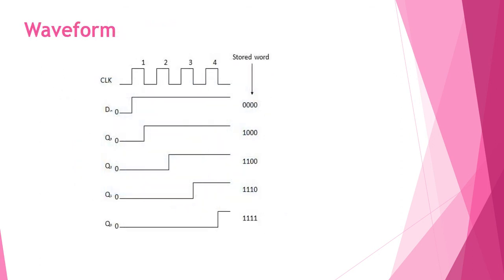The waveform diagram is also straightforward. Initially the output is 0. When the input is 1, the first clock cycle brings Q3 to 1 while the other flip-flops remain 0. On the second stage, Q2 goes to 1. On the third stage, Q1 goes to 1. On the fourth stage, Q0 goes to 1. The waveform follows this pattern accordingly.